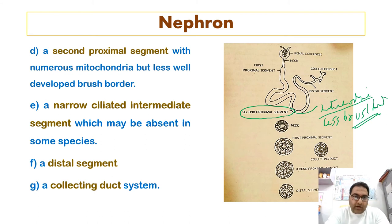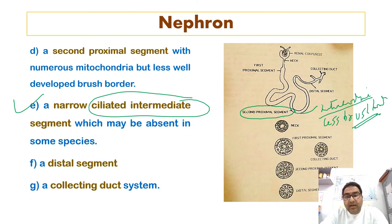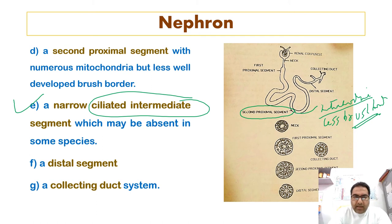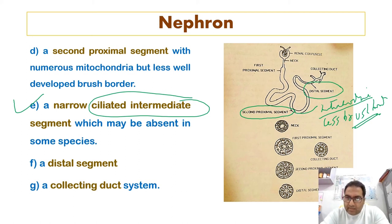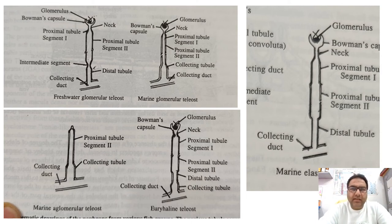There is also a narrow ciliated intermediate segment which can be absent in some species — it may be found between the first and second proximal segments. Then there is the distal segment, followed by the collecting duct system, which is present in most nephrons. Now let us talk about the different kinds of nephrons in different types of fishes.